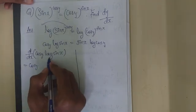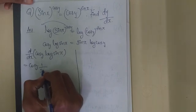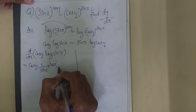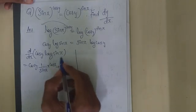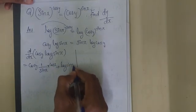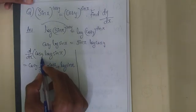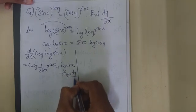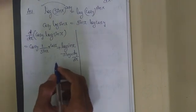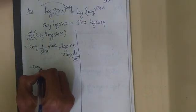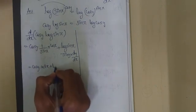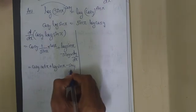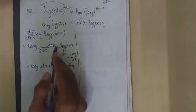The first function is cos y. The derivative of log sin x is 1 by sin x times cos x. Then plus the second function log sin x times the derivative of first, which involves cos y and minus sin y terms, giving cos x over sin x, that is cot x, times cos y.